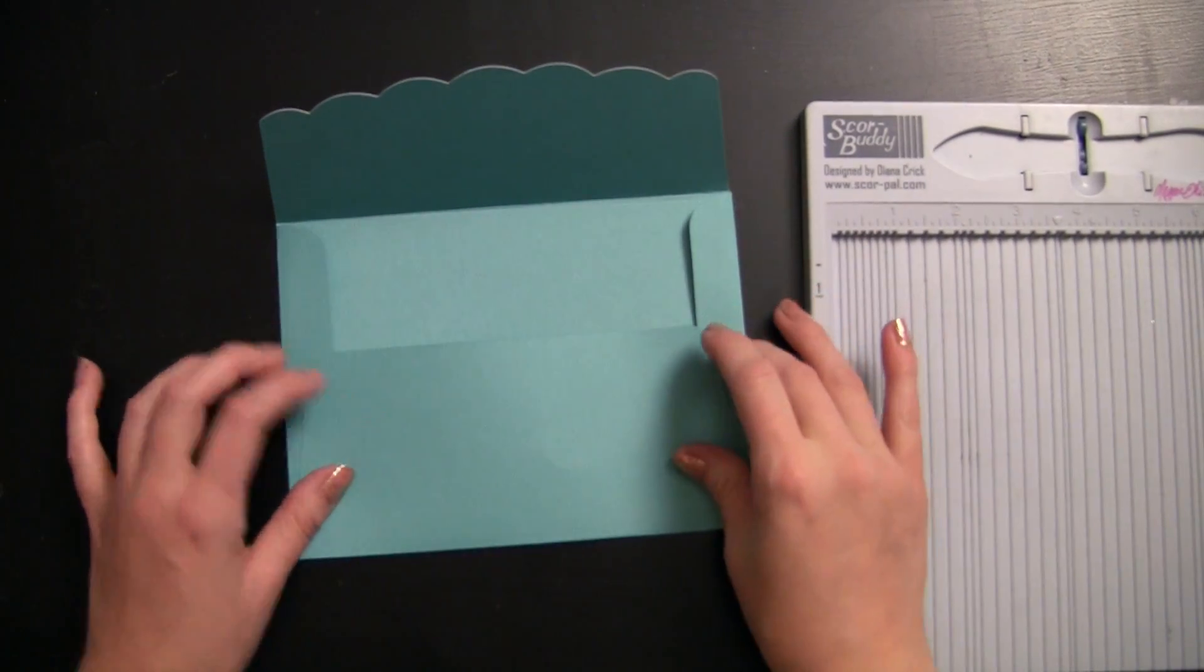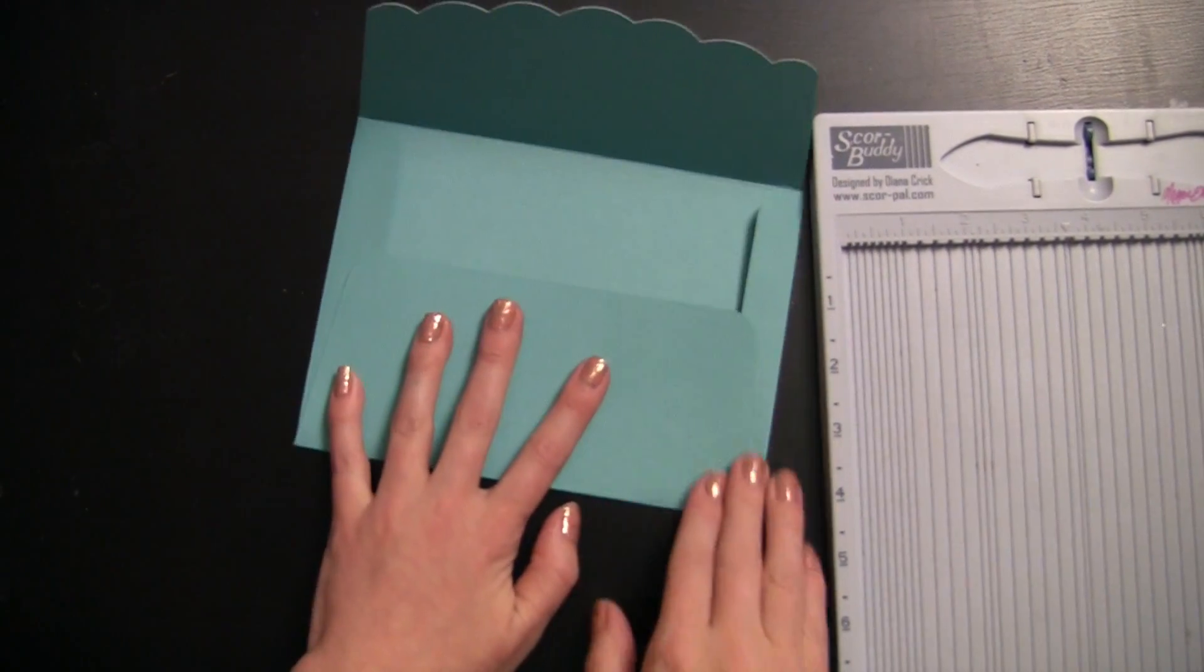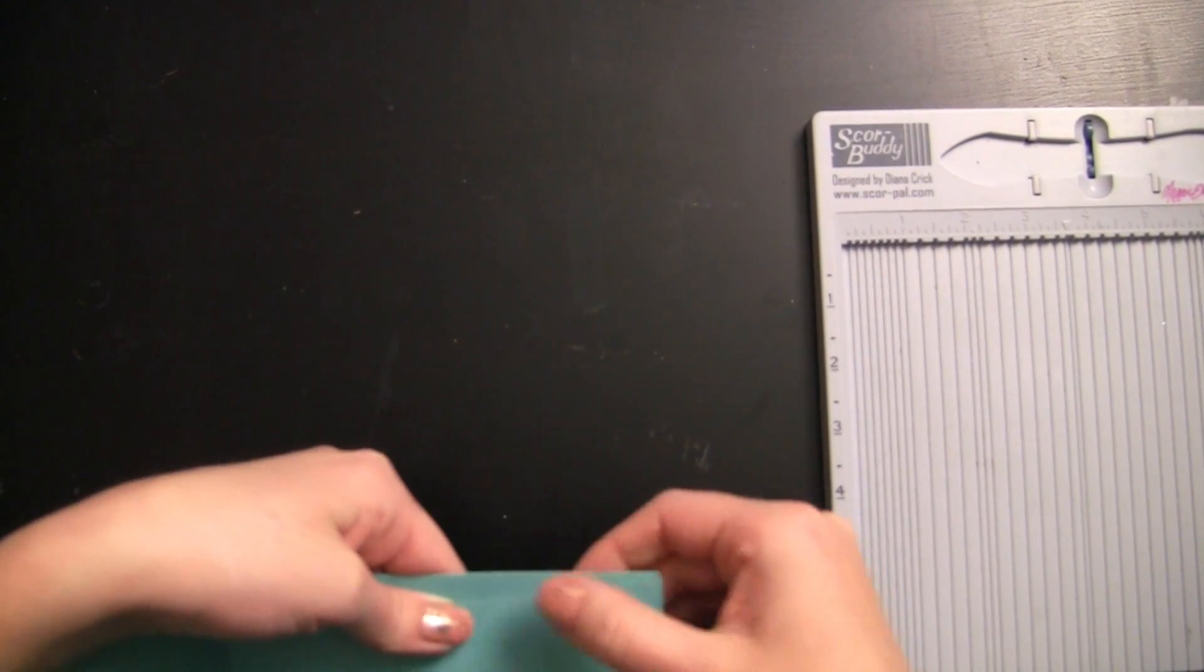So I'm just going to grab my glue glider here along the just bottom edges, because you don't need it all the way up. It's not that high. And then any overhang with the glue glider, it's pretty awesome. You can just kind of roll it away if there is any. There's only a tiny little bit there at that corner.